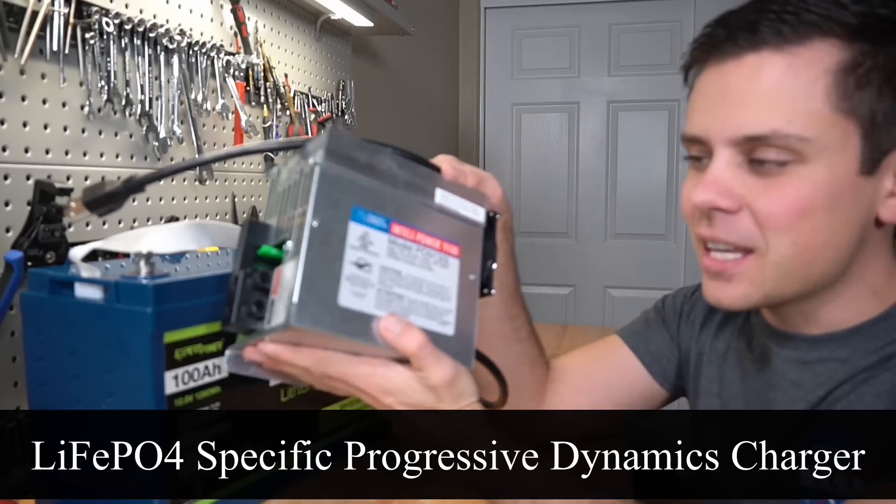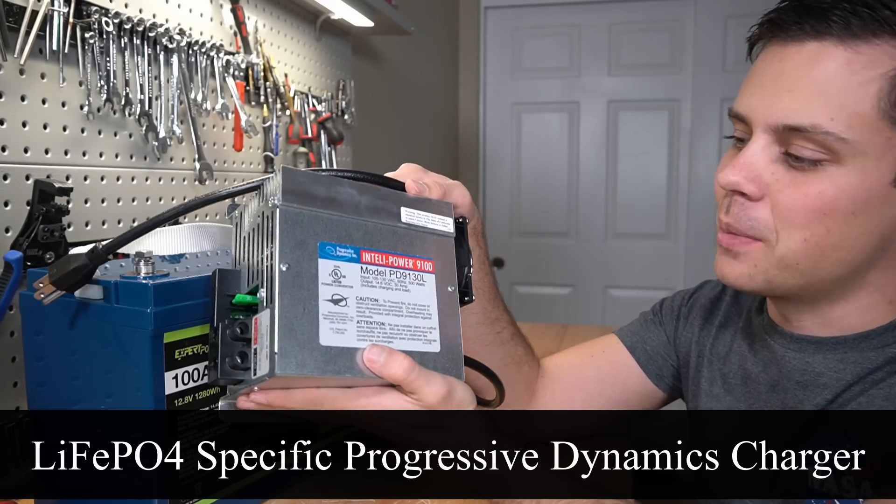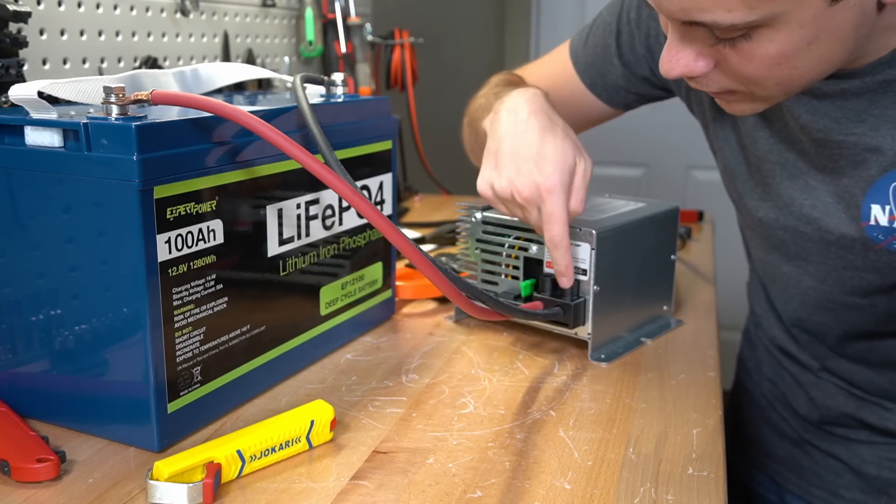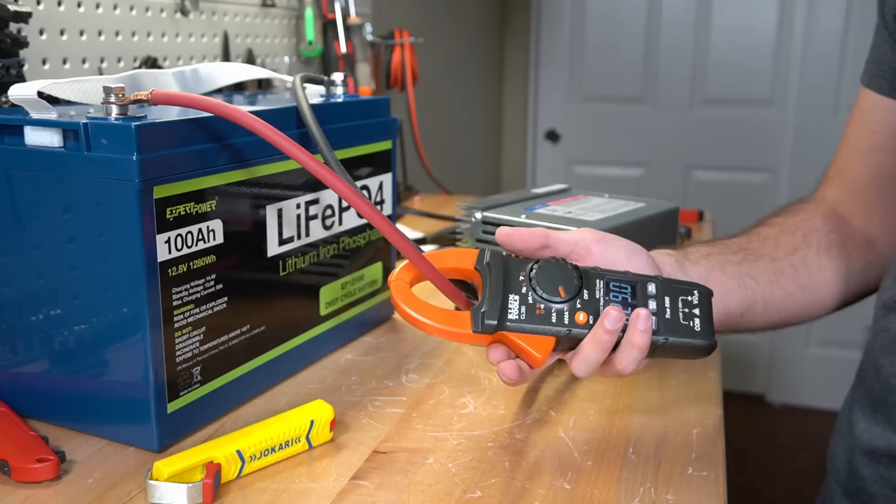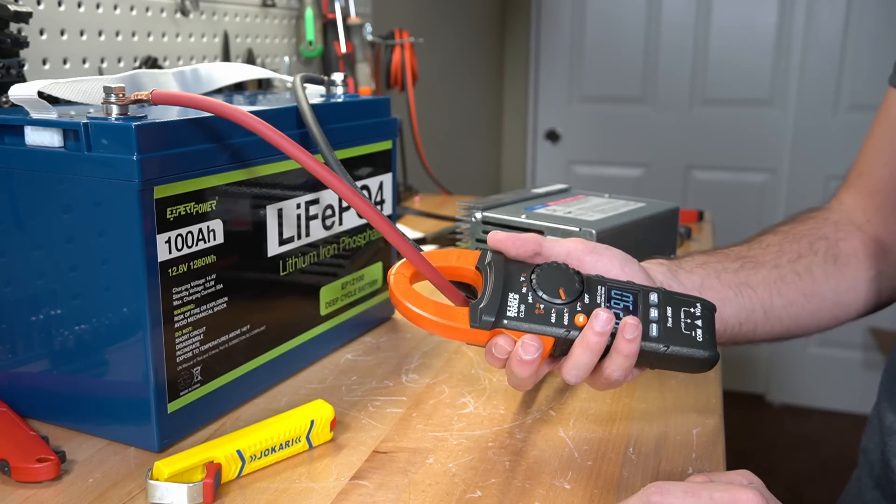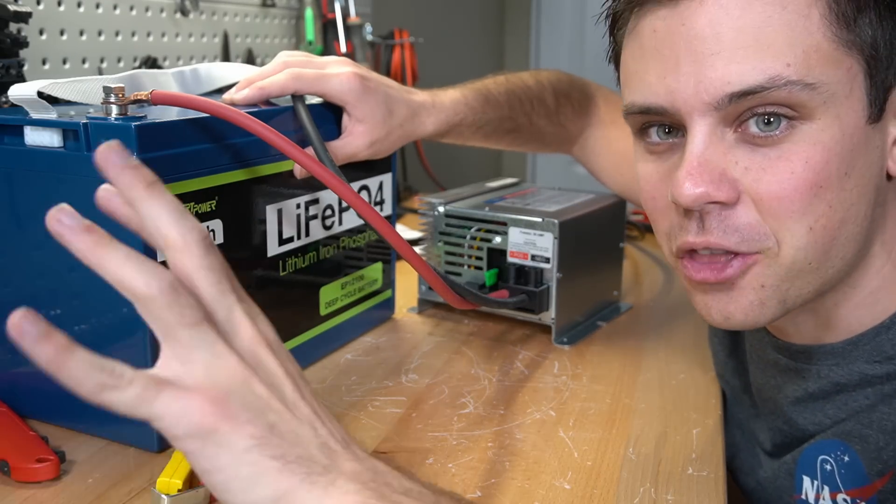Today we're going to test out a lithium iron phosphate specific UL listed progressive dynamics charger. Now we have the positive connected to the positive and the negative connected to the negative. Look at that, 30 amps going into this battery right now. It works really well. This battery charger will fill up this battery in less than three hours.